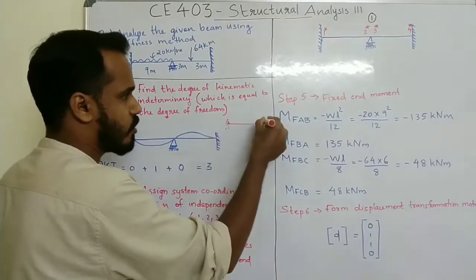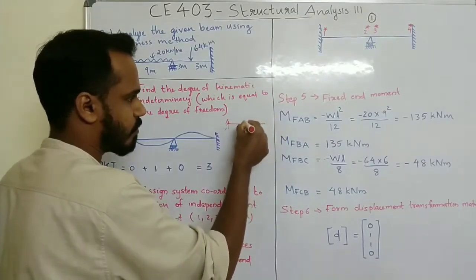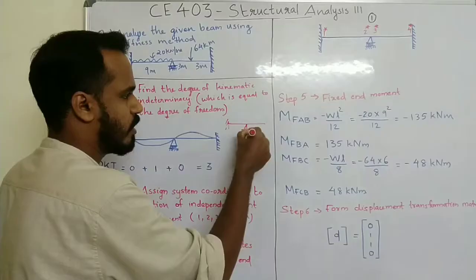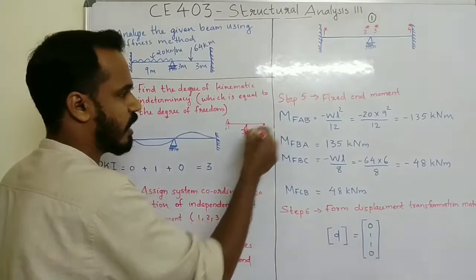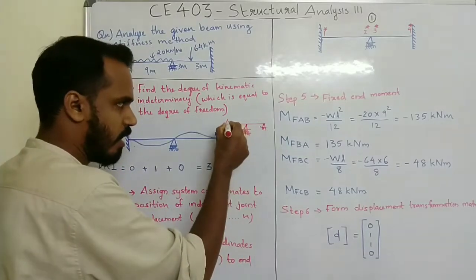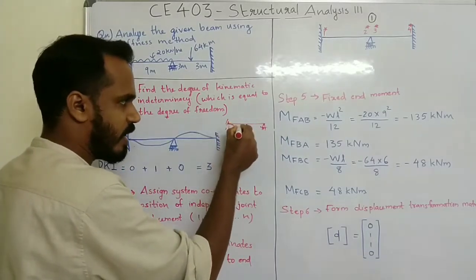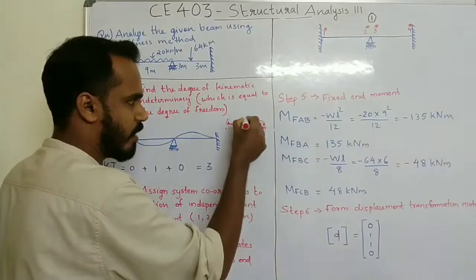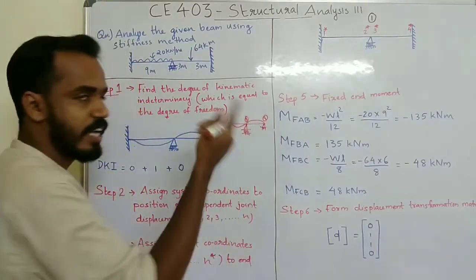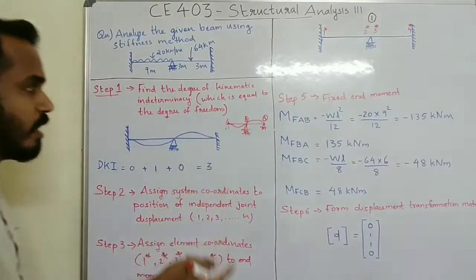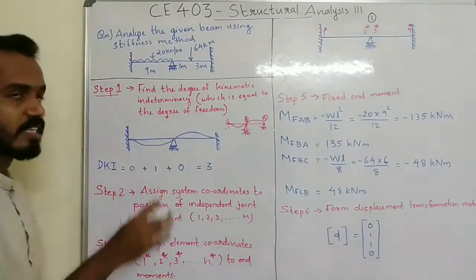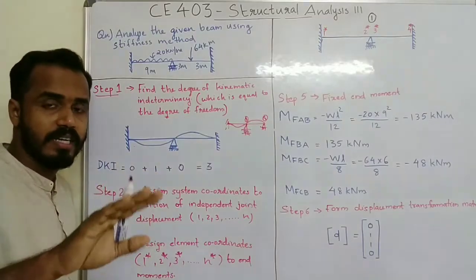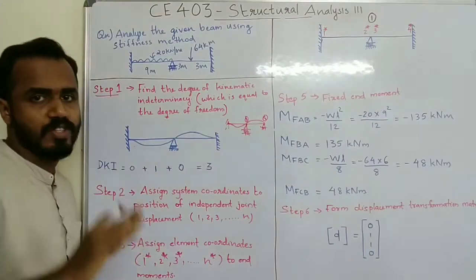Looking at the figure again, here we have a roller support — it is a roller support — so here we have a degree of freedom. If there is a degree of freedom, then we assign one and two system coordinates. We have to choose two system coordinates.